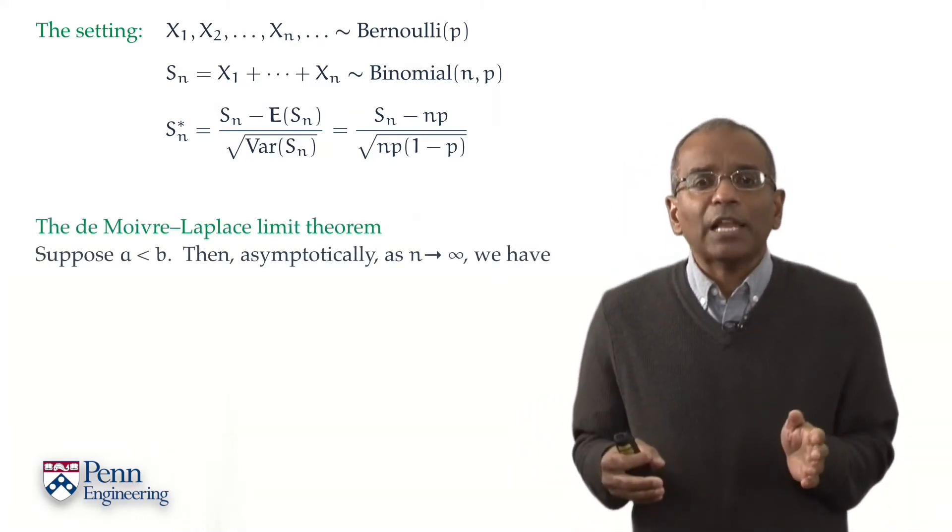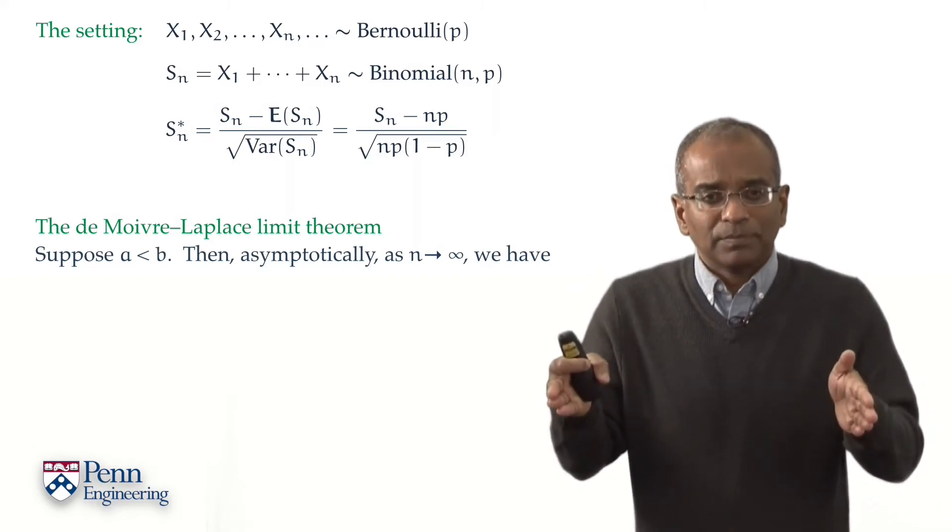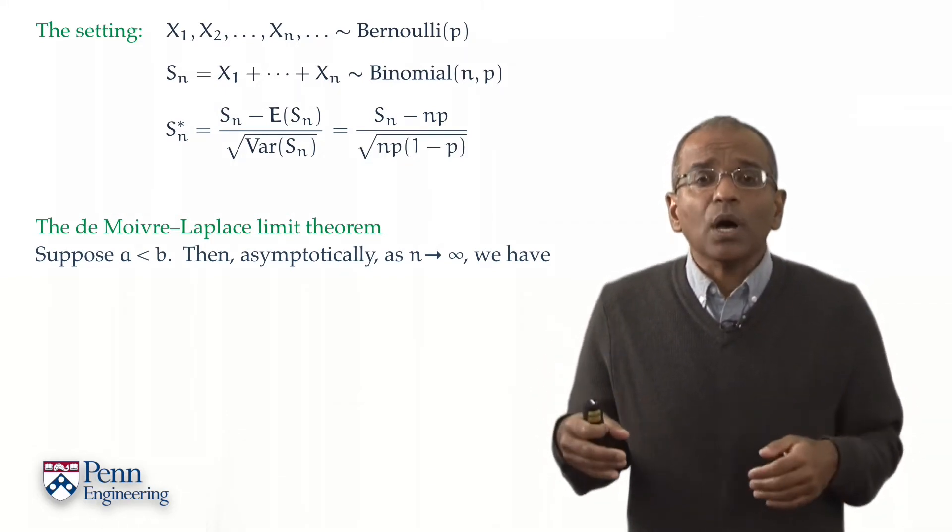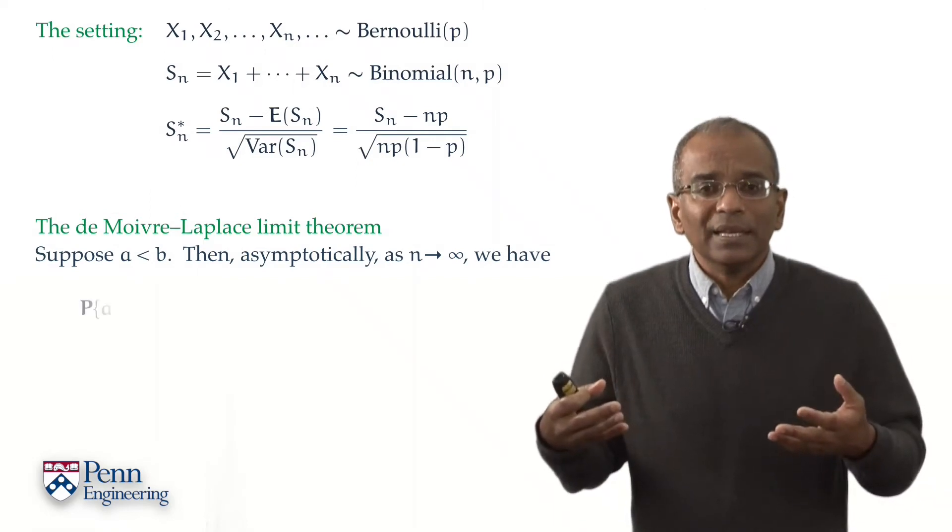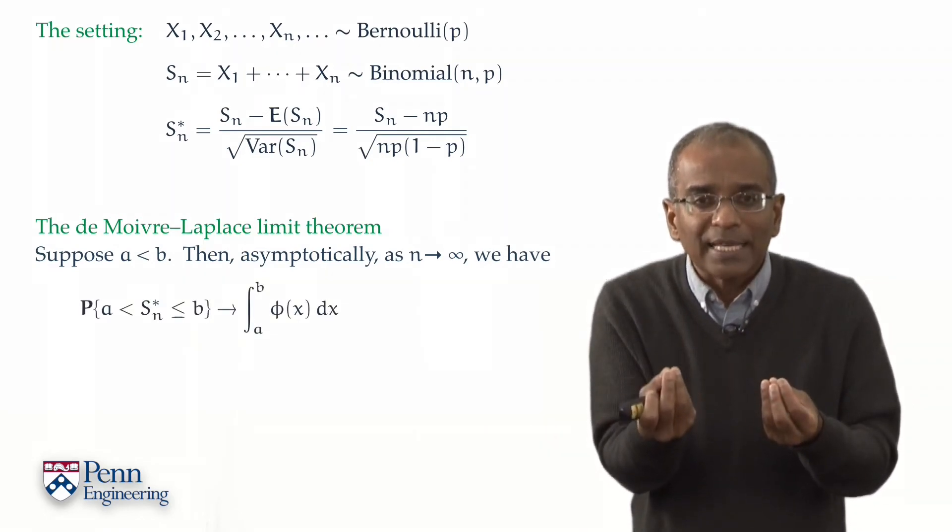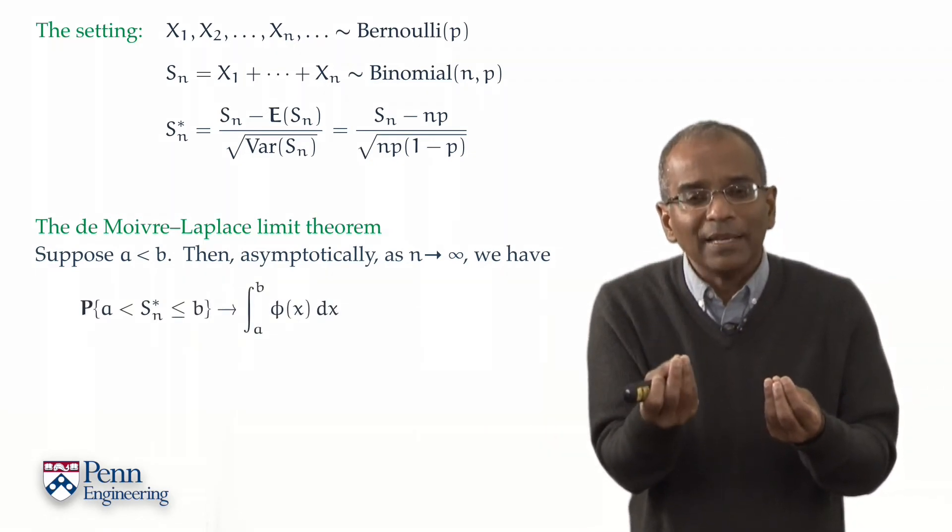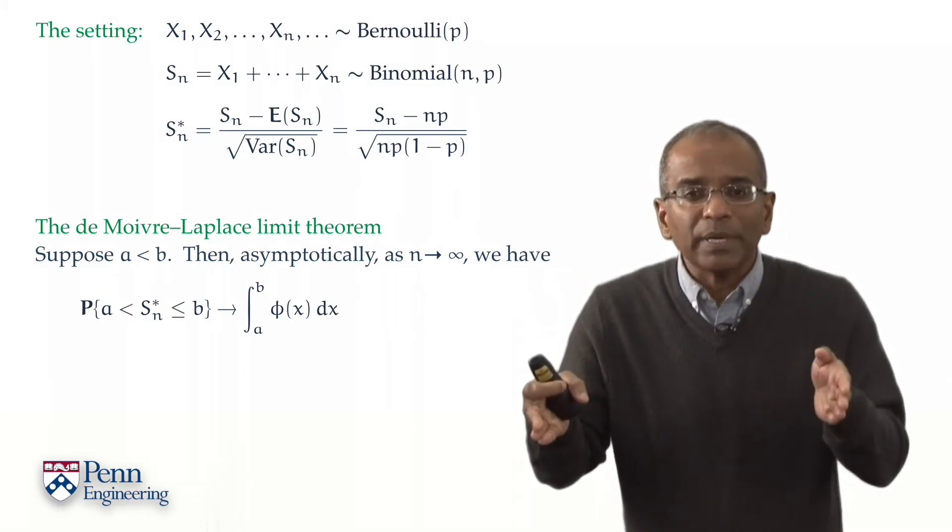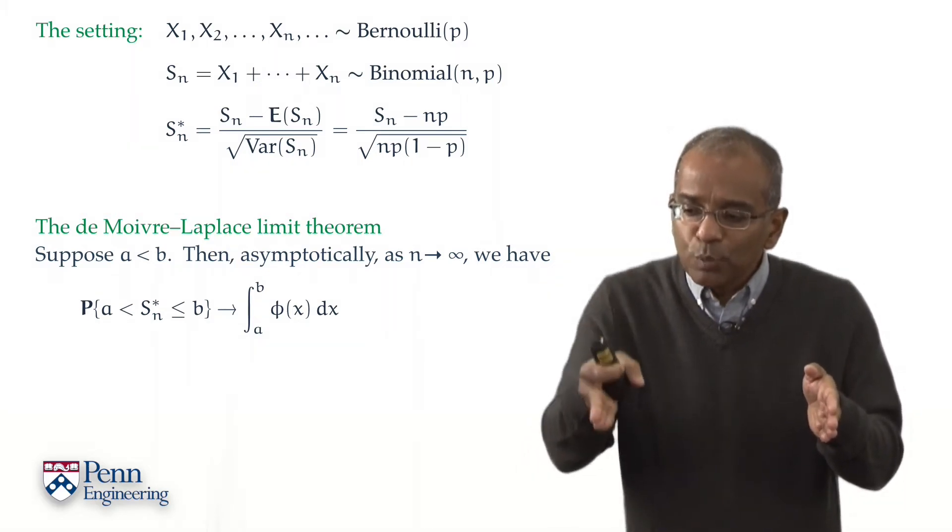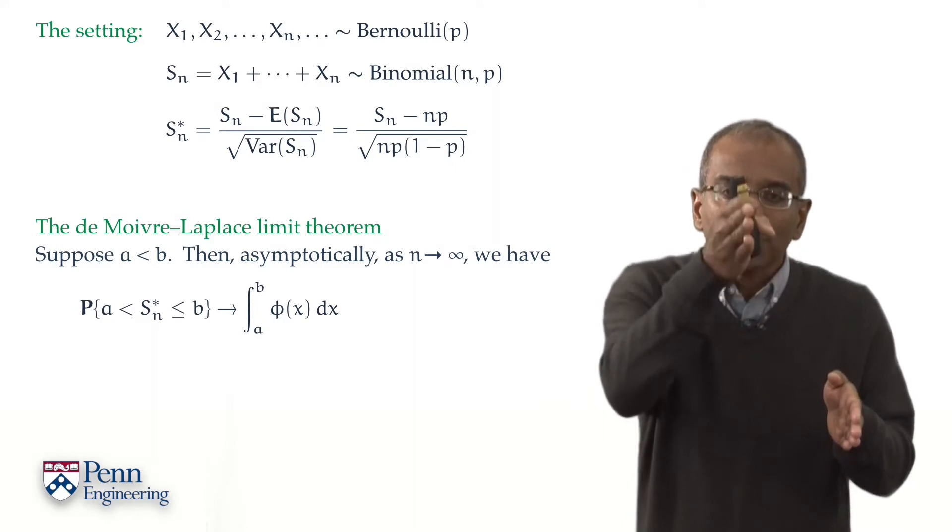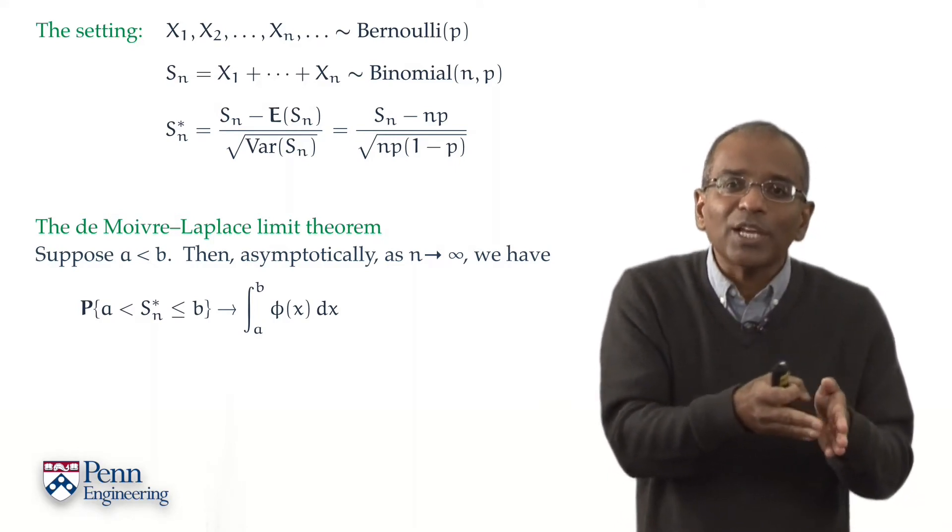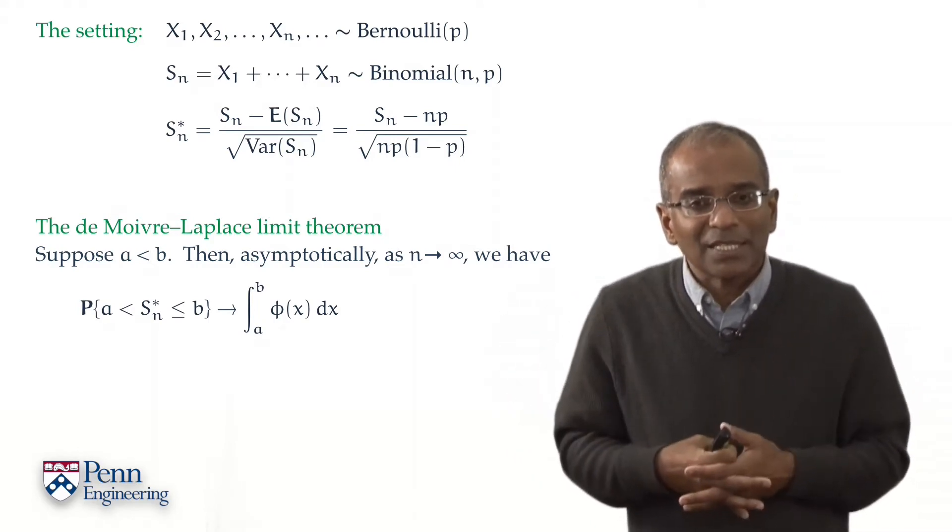The de Moivre and Laplace theorem now says the following. Pick any values A and B, A is less than B. We'd like to ask what is the probability that the discrete variable Sn star for a given n lies between A and B. In other words, we want to accumulate the mass function for Sn star in the range from A to B. That's what additivity tells us.